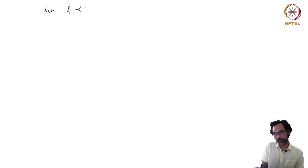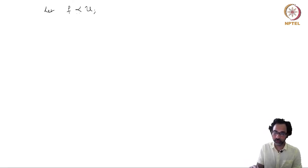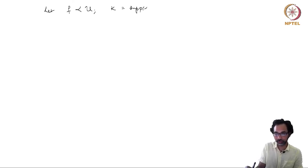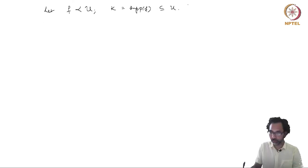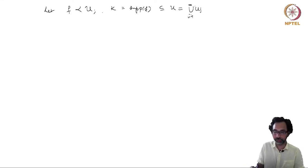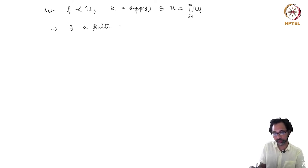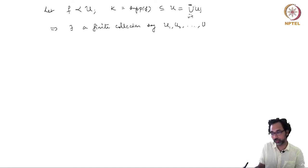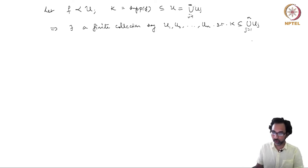Let us fix a function f with compact support in U whose range is between 0 and 1, and let K be the support of f, which sits inside U. Since U is a union of the U_j's, this is an open cover of the compact set K, and so there exists a finite subcollection U_1, U_2, ..., U_n such that K ⊆ U_1 ∪ ... ∪ U_n.